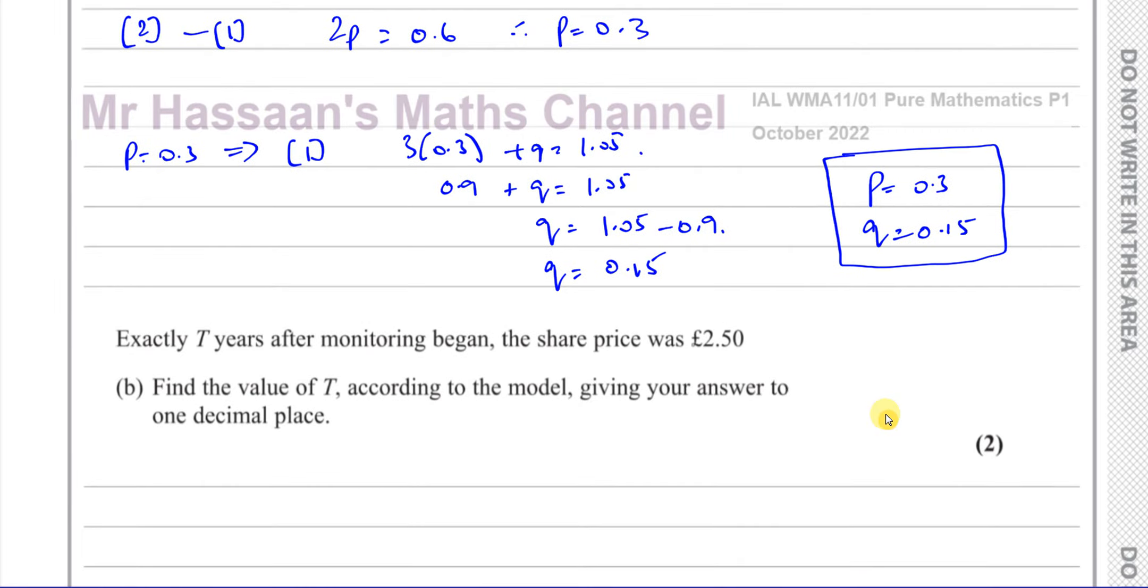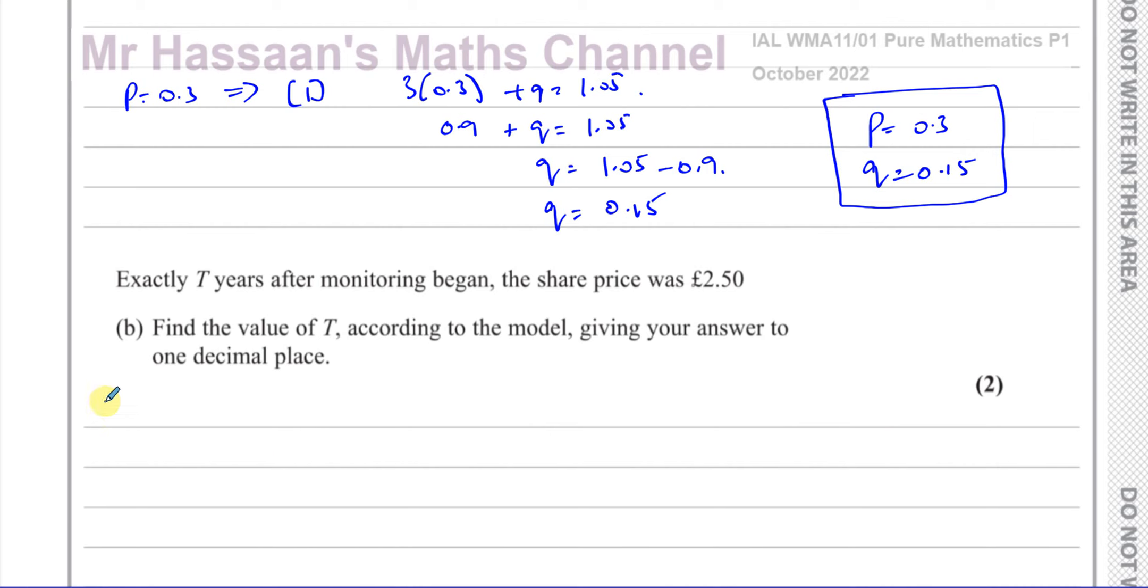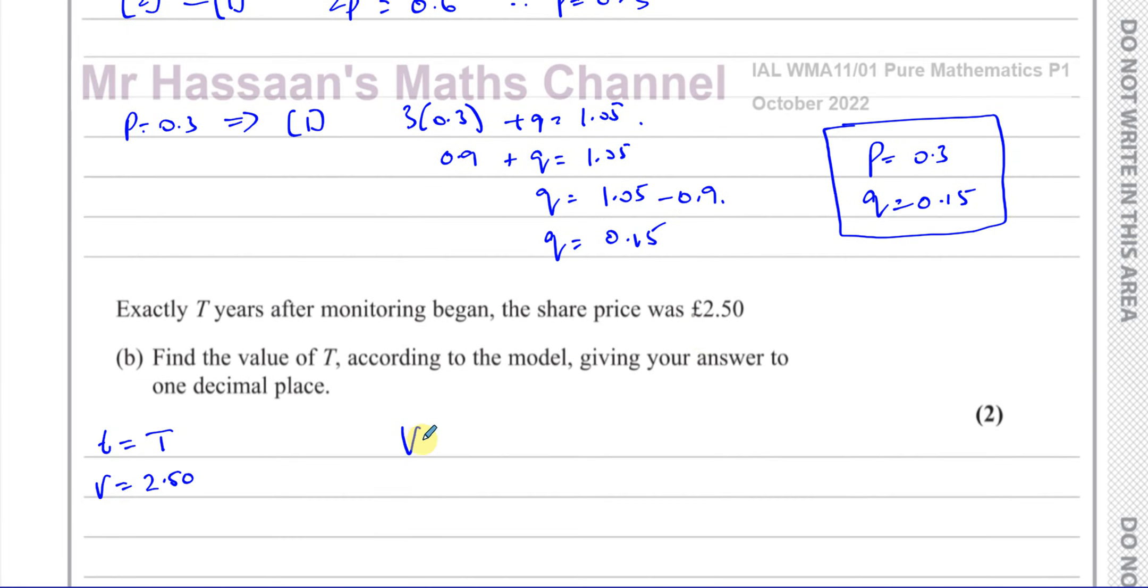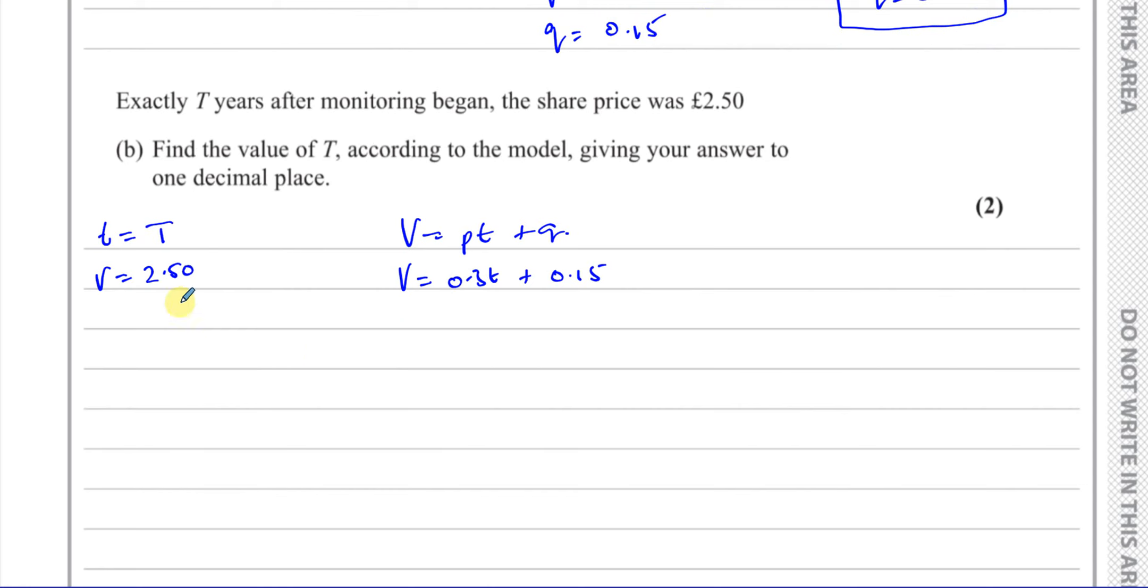All right. Then it says exactly T years after monitoring began, the share price was £2.50. So that means when the T in our equation was equal to capital T, then V became £2.50. And we know our equation is given by V equals PT plus Q. Now we know what P and Q are. So V equals 0.3T plus 0.15. So now we're told when V is 2.5, then T is capital T. So 0.3 times T plus 0.15. We've got to find what T is.